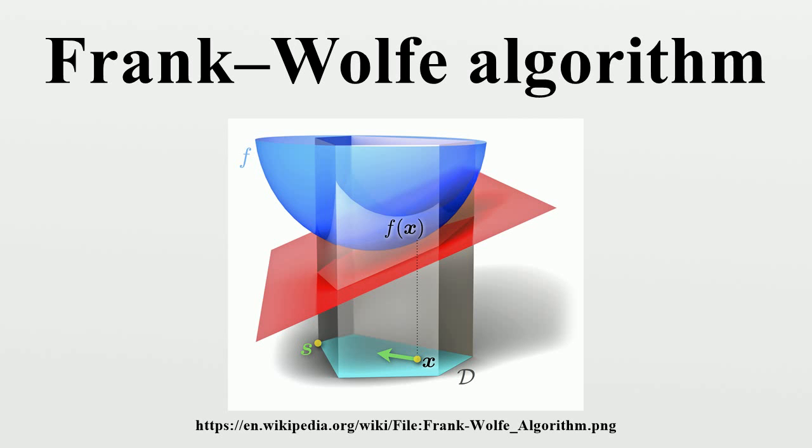In each iteration, the Frank-Wolfe algorithm considers a linear approximation of the objective function and moves slightly towards a minimizer of this linear function.